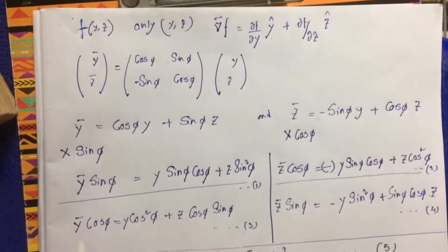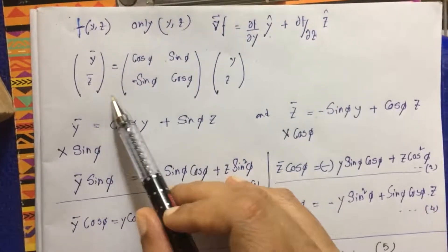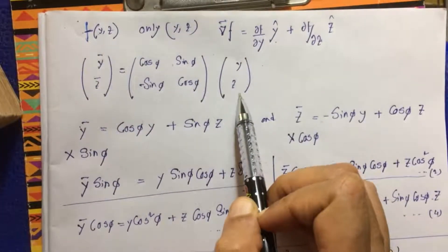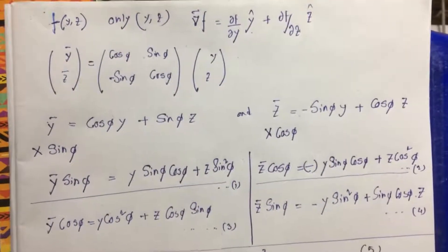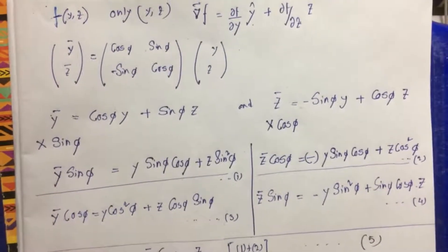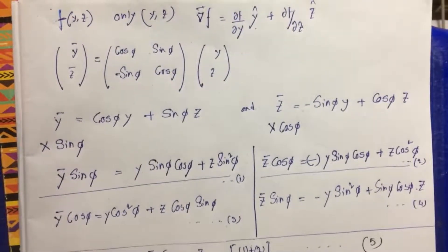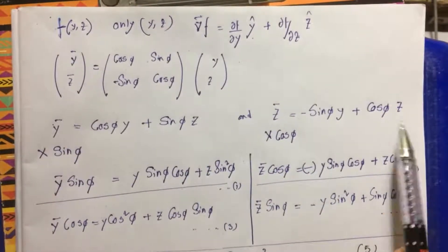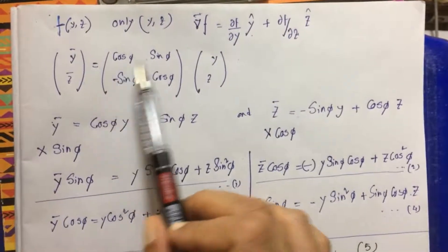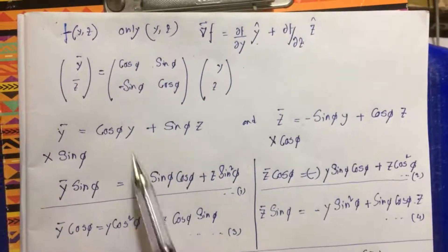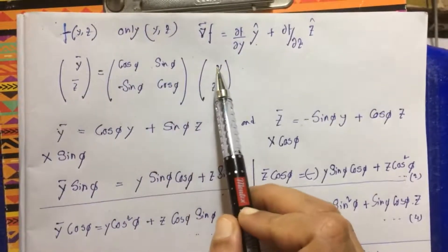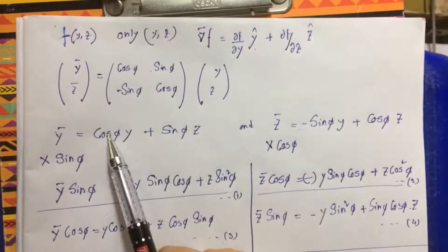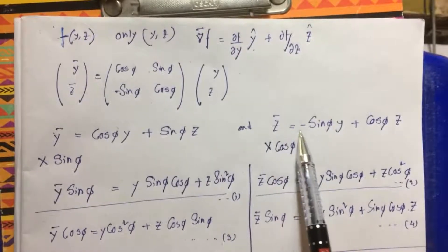For the transformation relation, we can write this. We have already shown this in our 'how the vectors transform' video. So y_bar should be like this and z_bar should be like this from this relation. y_bar equals cos(φ)y plus sin(φ)z. So we have written like this.